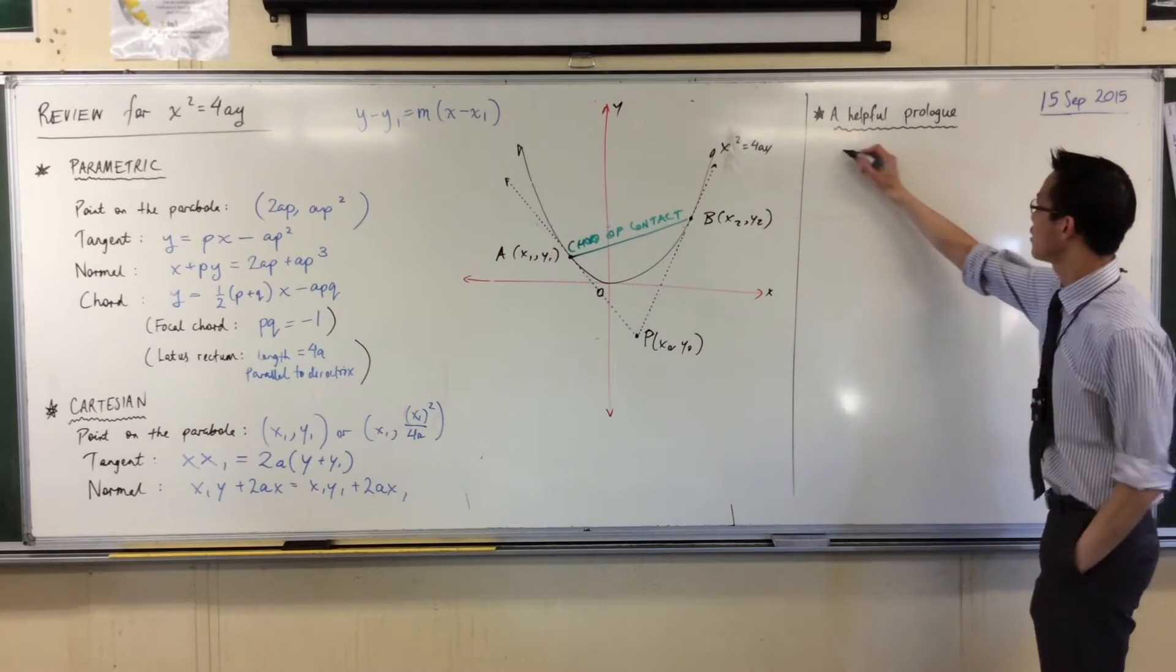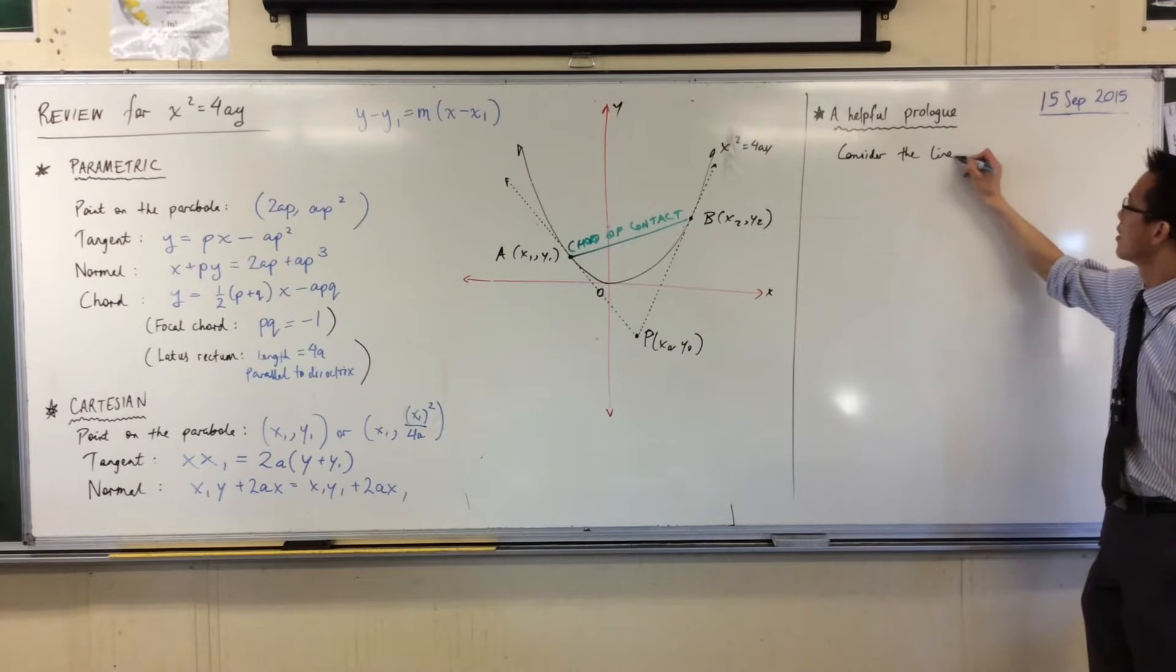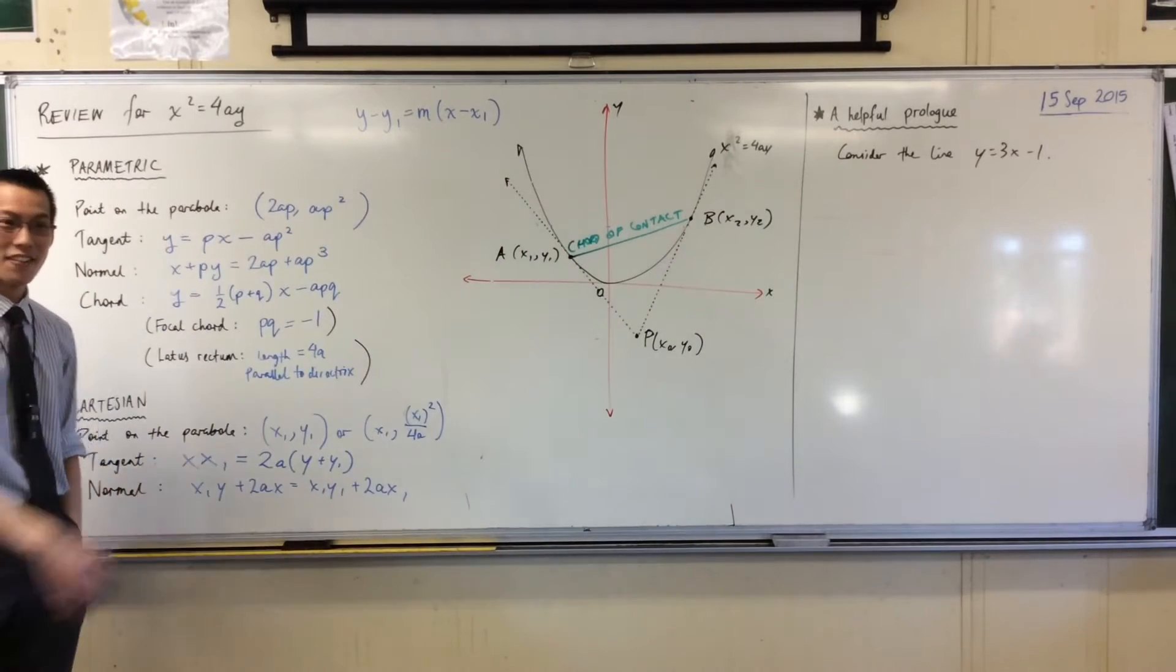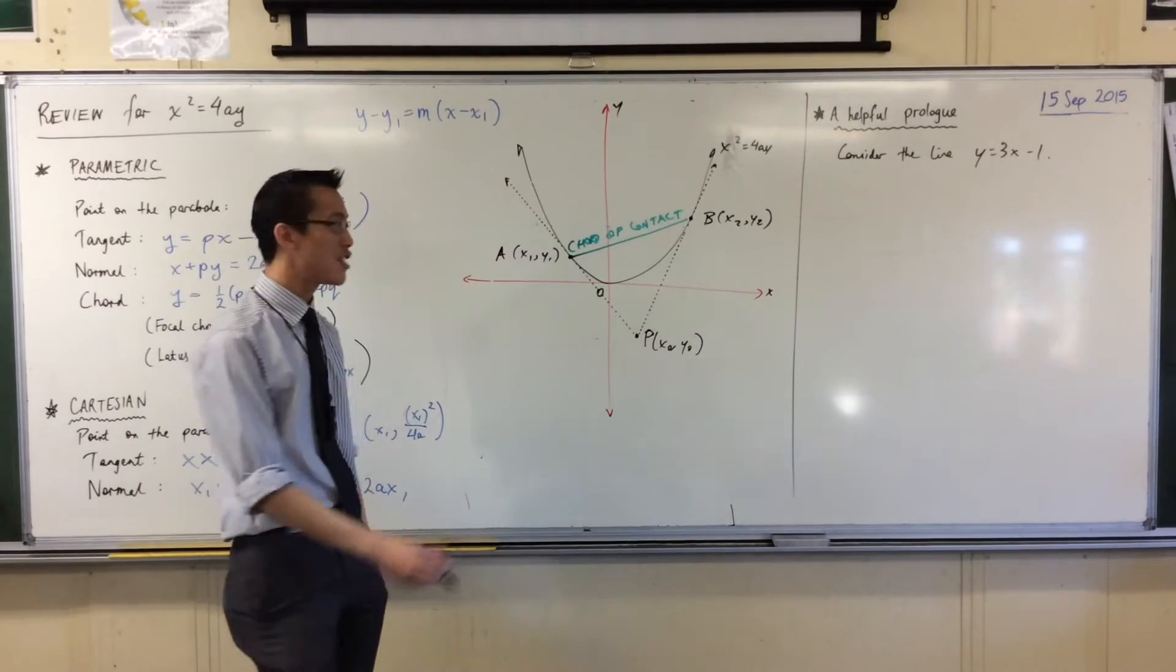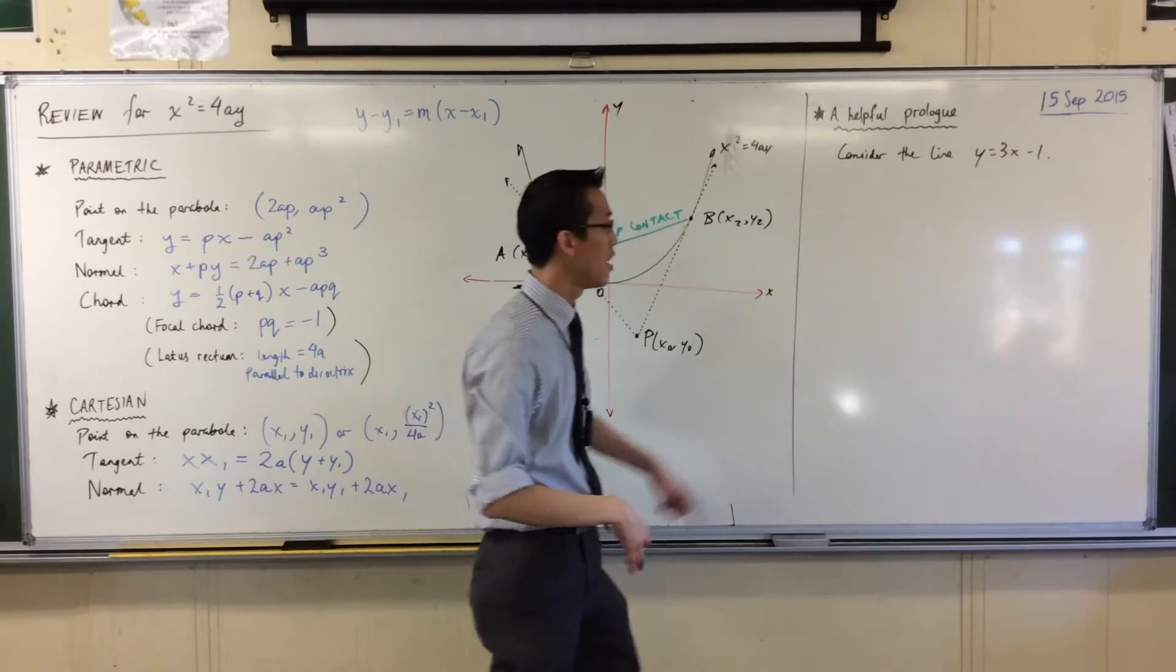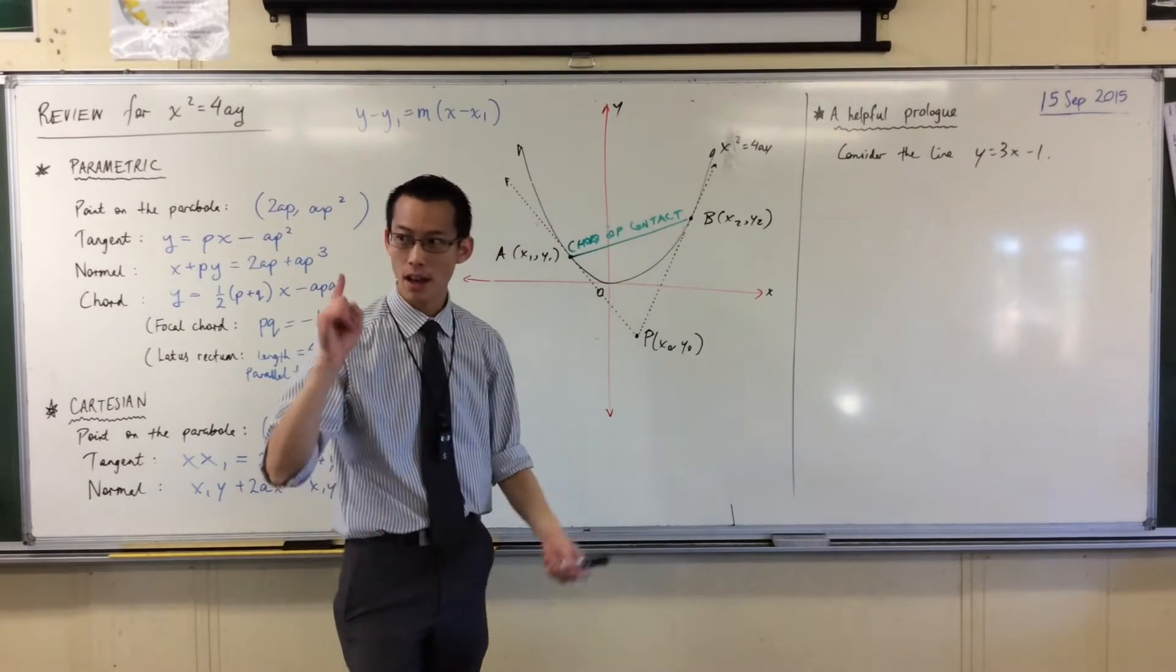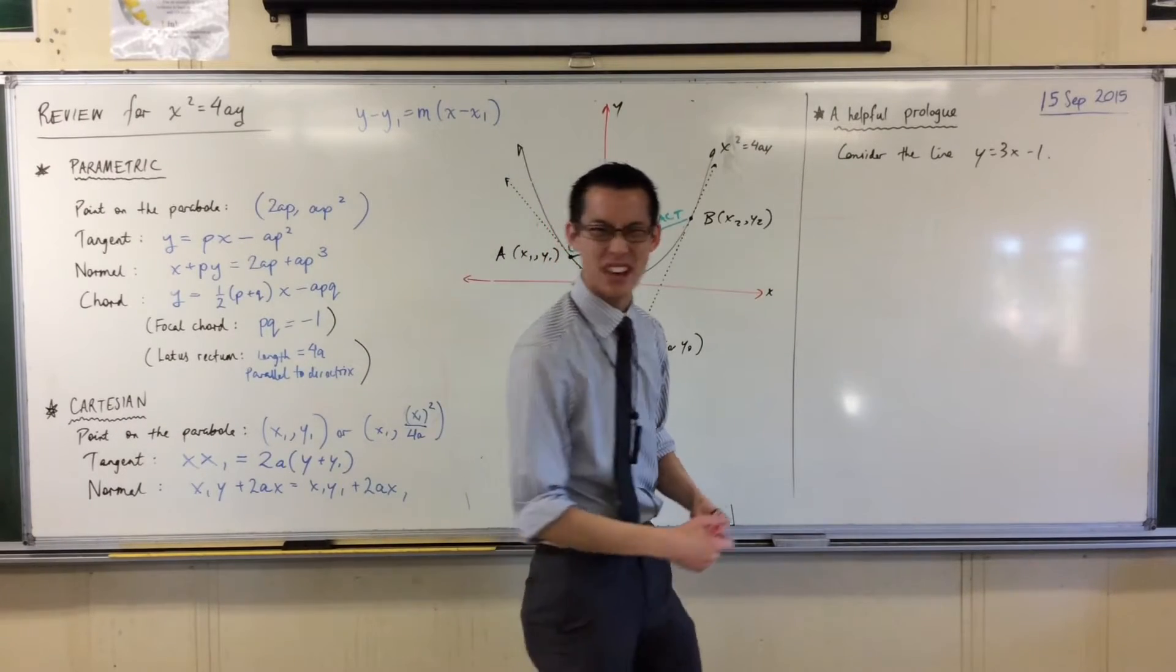So here's my prologue. I'd like you to consider the line with this equation. Now when you first met these linear equations, you didn't know that 3 was going to be the gradient, and you didn't know that negative 1 was going to be the y-intercept. You didn't even really have language for that. We developed it afterwards. What did you do to graph this thing to know where it was going? You used the table of values and then you used that to plot points. Let's draw up a quick table of values.